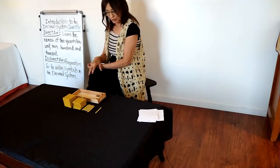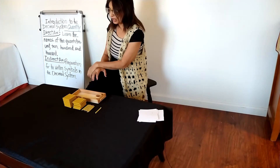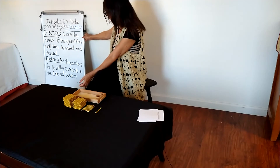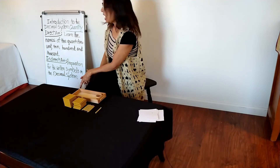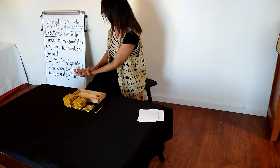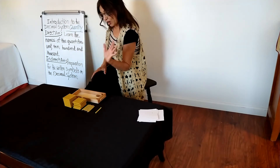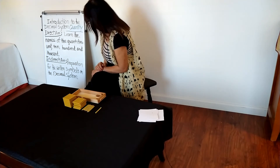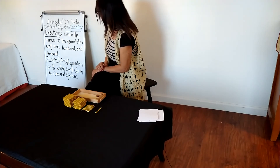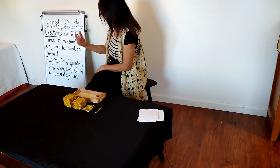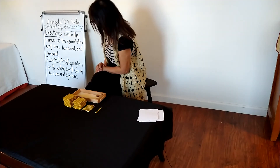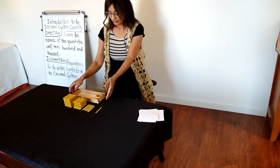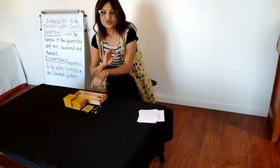So that's all for today. Before I go, I want you to take a look over here. I wrote down the direct aim and indirect aim. The direct aim of this presentation is to learn the names of the quantities: unit, 10, 100, and 1000. The indirect aim is preparation for the written symbols in the decimal system. Thank you for watching — I will see you in the next video.